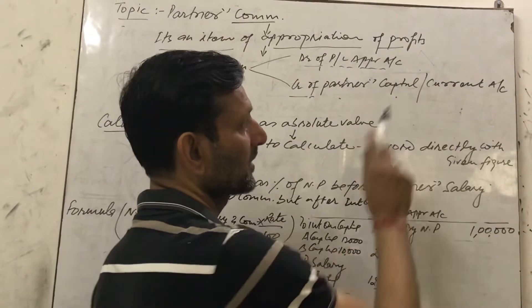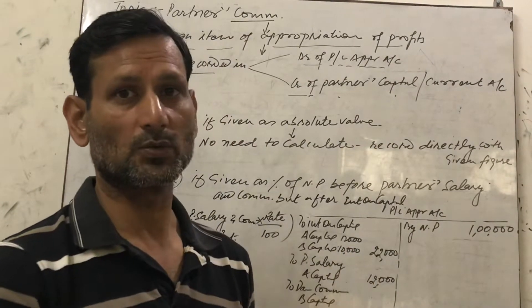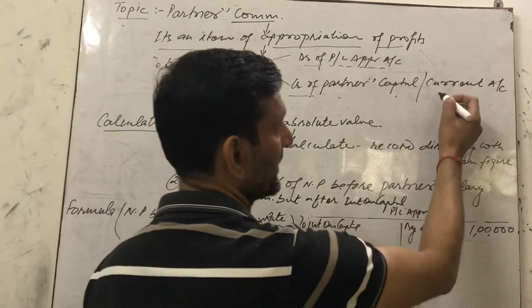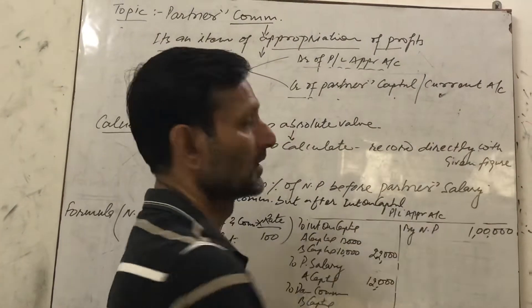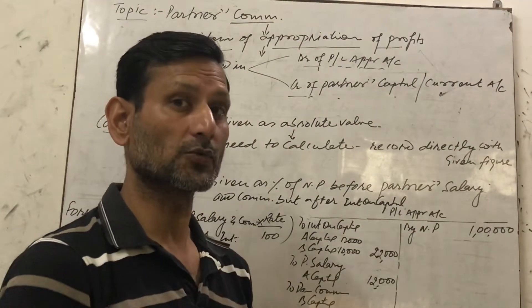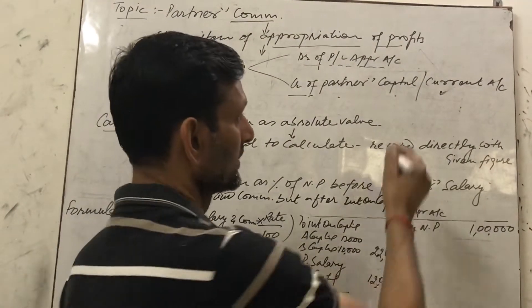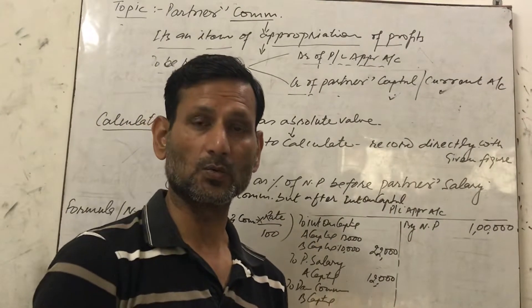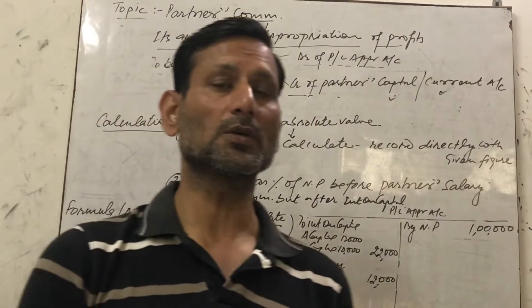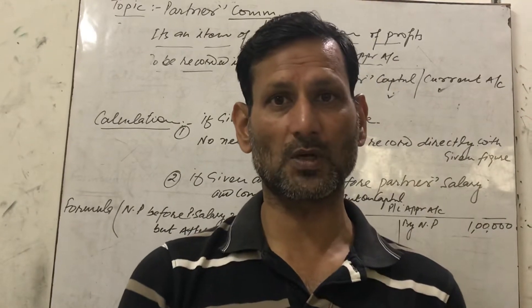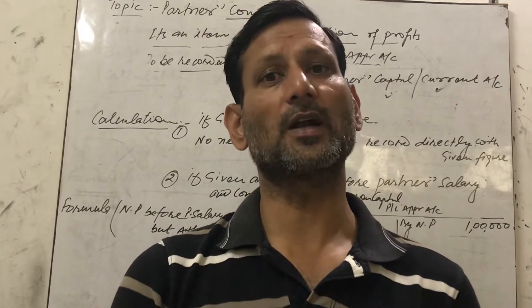Capital or Current Account means: if capital accounts are fixed, then credit the Current Account. But if partners maintain capital as fluctuating capital, then credit the Partners' Capital Account. So, recording is: debit of Profit and Loss Appropriation Account and credit of Capital or Current Account.